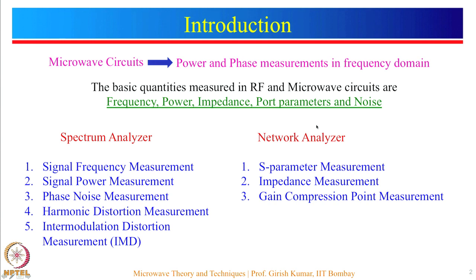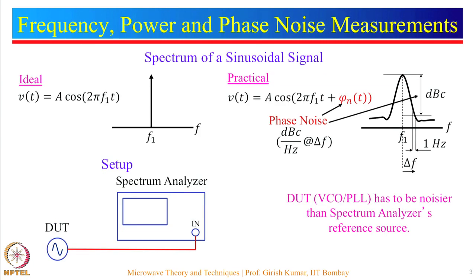Network analyzers are used for S parameter measurements primarily. They can also be used to measure the impedance of a network, which is the input or output impedance. They are also used to measure the gain compression point, which is P1dB of a network. Let us see how frequency, power and phase noise can be measured using a spectrum analyzer.